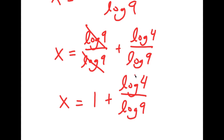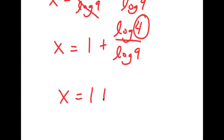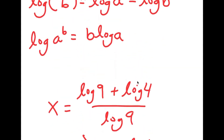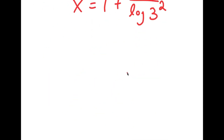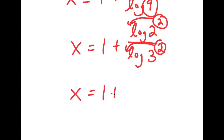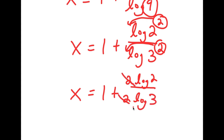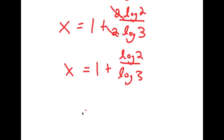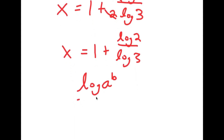From here, I'm going to rewrite log 4 as log of 2 squared, and log 9 as log of 3 squared. Remember the property log a to the power of b equals b times log a — I can move the 2 to the front on both of these. So I get x is equal to 1 plus 2 log 2 over 2 log 3. If I have log a to the power of b over log c to the power of b, these two exponents cancel out.